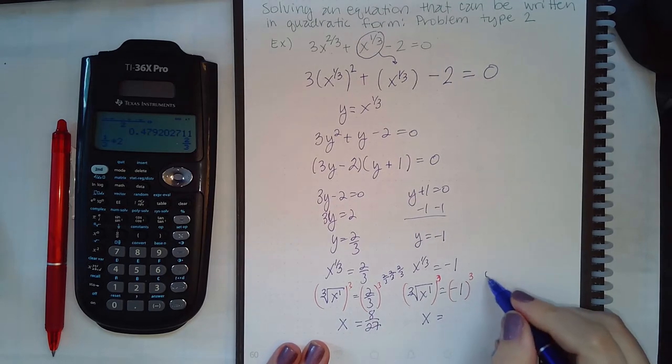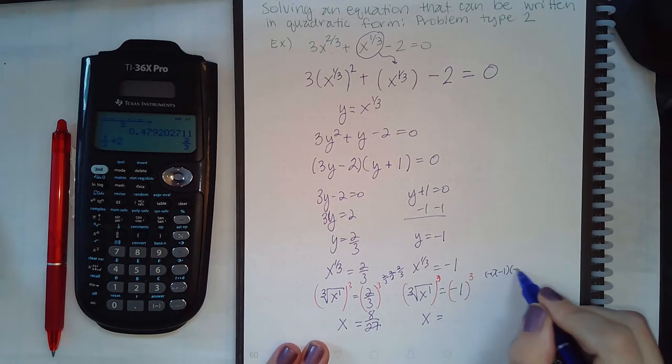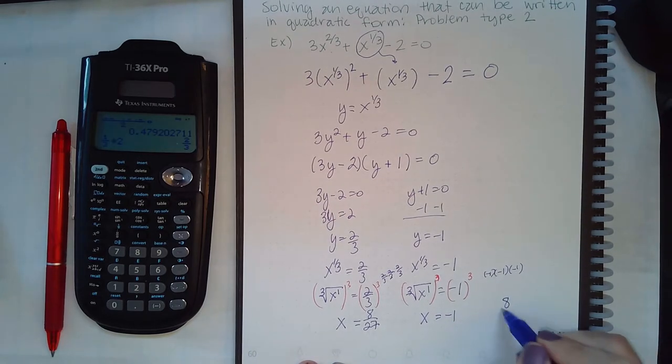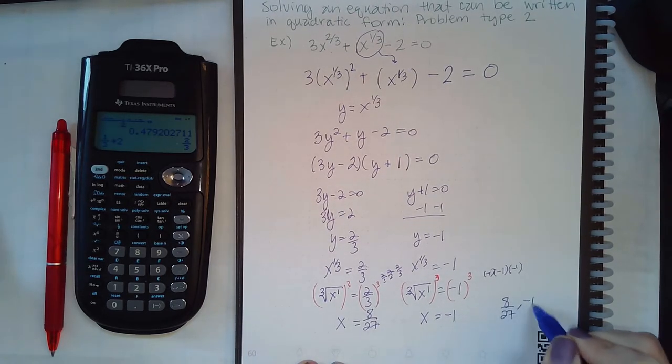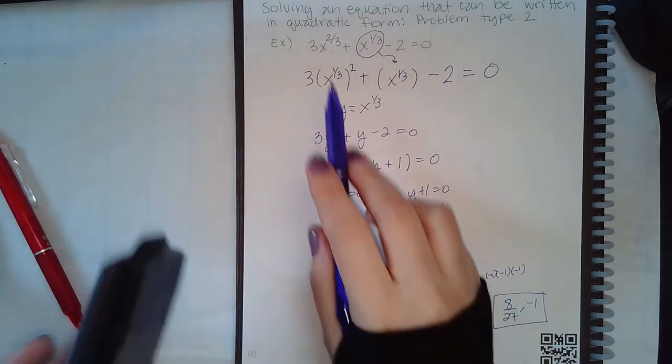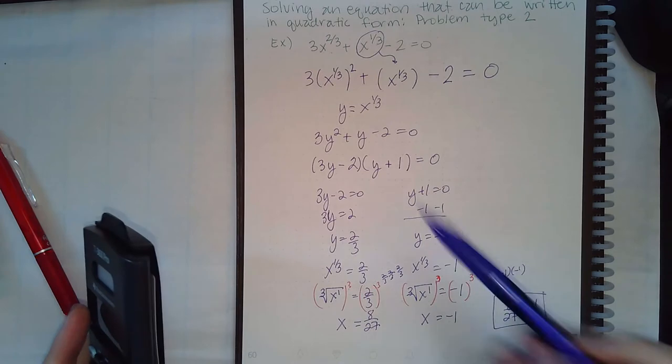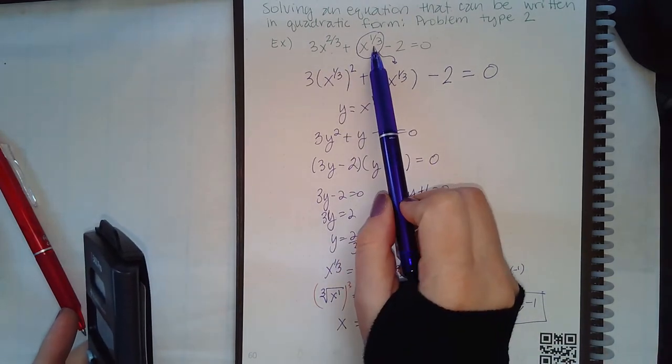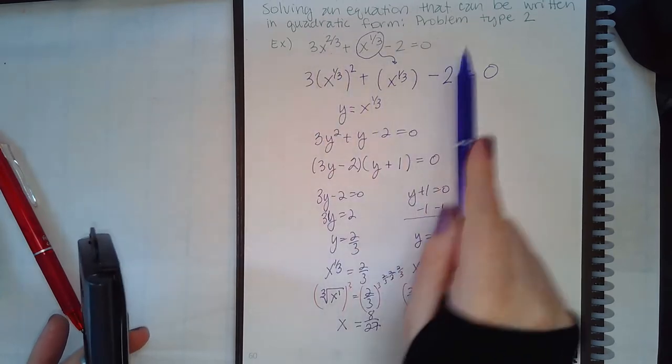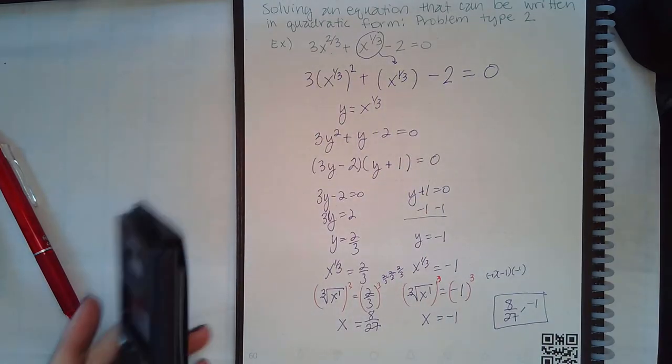It's two-thirds times two-thirds times two-thirds, which is actually going to give me eight over twenty-seven, which cannot be reduced. Here you have negative one times negative one times negative one, which results in negative one. So in the end, you have two solutions: eight over twenty-seven and negative one. And then here, because these are cube roots, the signs will all play out and I don't need to check those solutions.